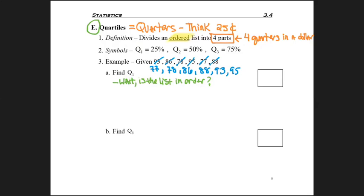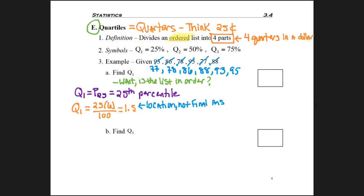So now my list is in order and I'm ready to find Q1. Q1, it's the same thing as P25. It's the 25th percentile. So that means I need to take 25 times, wait, how many numbers were in the list? Six. Okay, divide by 100 and I get 1.5. Now remember, 1.5 is the location. It's not the final answer.